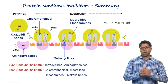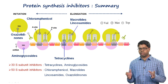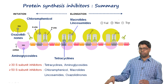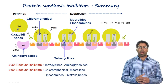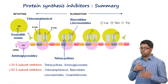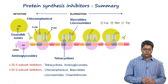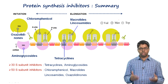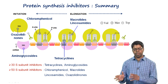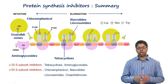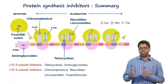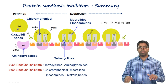To summarize protein synthesis inhibitors: antibiotics act at specific ribosomal sites to inhibit either the initiation or elongation phase. Aminoglycosides (bind 30S) and oxazolidinones like linezolid (bind 50S) both inhibit the initiation phase by preventing 70S complex formation. Chloramphenicol, macrolides, lincosamides, and tetracyclines bind to either the 30S or 50S subunit and inhibit the elongation phase of protein synthesis.